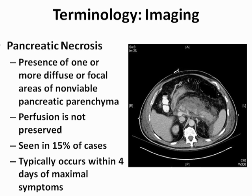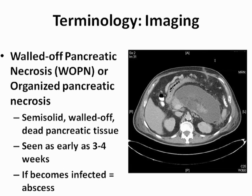This CT scan is typical of pancreatic necrosis, showing one or more diffuse or focal areas of non-viable pancreatic parenchyma — the underperfused, darker areas near the pancreatic neck and body; perfusion is clearly not preserved. This is seen in 15% of cases and typically occurs within 4 days of maximal symptom onset. The next CT scan shows a walled-off collection of necrotic pancreatic tissue, typical of walled-off pancreatic necrosis or organized pancreatic necrosis. It is semi-solid with areas of dead pancreatic tissue, and a very small area of viable body-tail pancreas is still preserved. This can be seen as early as 3 to 4 weeks and can also evolve into an abscess. We will discuss the difference between sterile and infected pancreatic necrosis in coming slides.